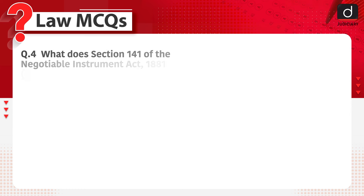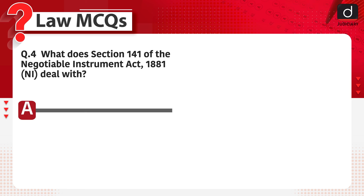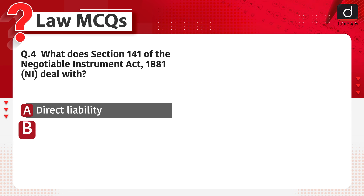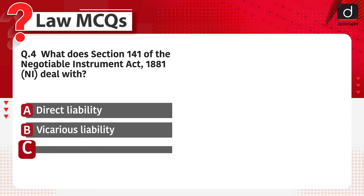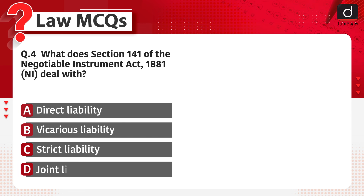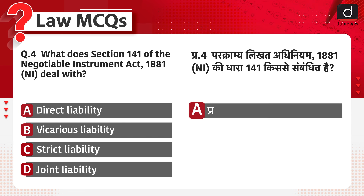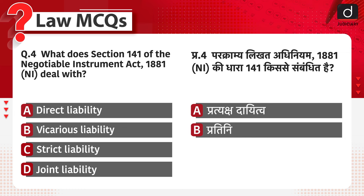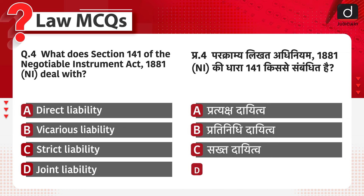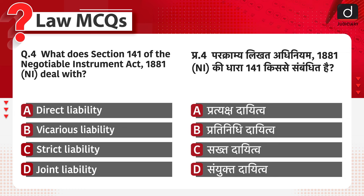Next: What does section 141 of the Negotiable Instrument Act 1881 deal with? Direct liability, vicarious liability, strict liability, or joint liability? परक्राम्य लिखित अधिनियम 1881 की धारा 141 किससे संबंधित है? प्रत्यक्ष दायित्व, प्रतिनिधि दायित्व, सख्त दायित्व, या संयुक्त दायित्व? The correct answer is option B, vicarious liability.